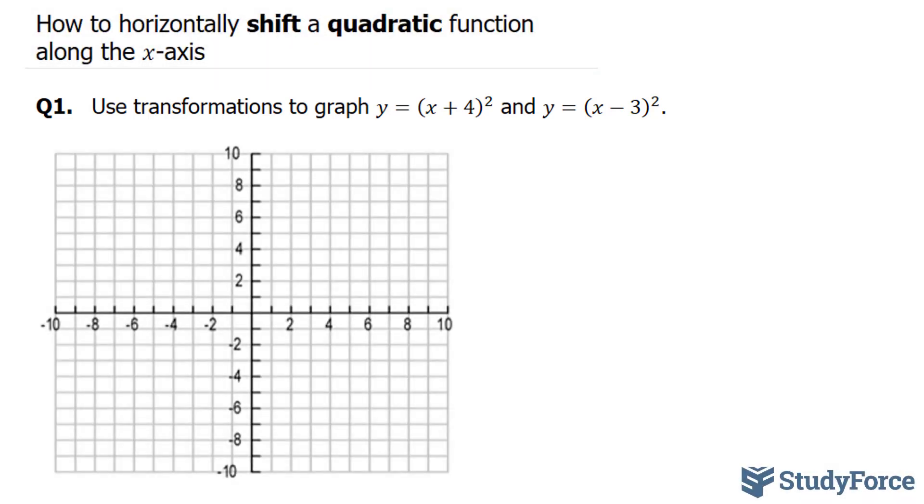I want to start off by writing out the vertex form for a quadratic. It looks like this: y = a(x - h)² + k. So far, what we've learned in our previous videos is what this a does.